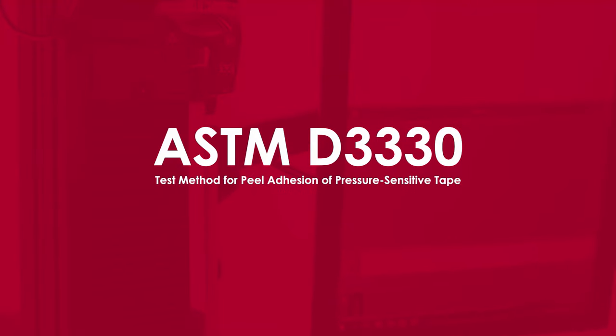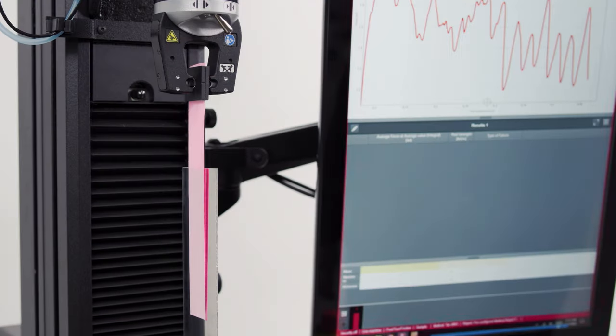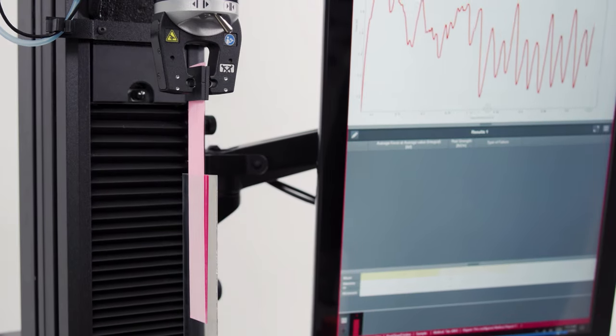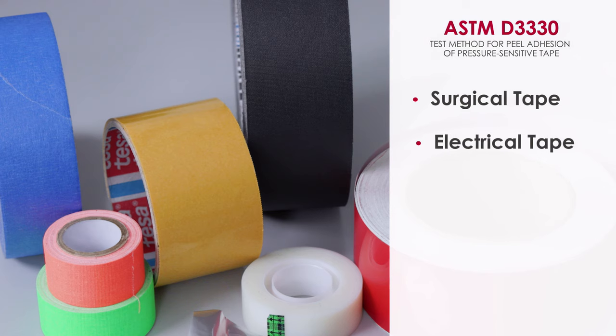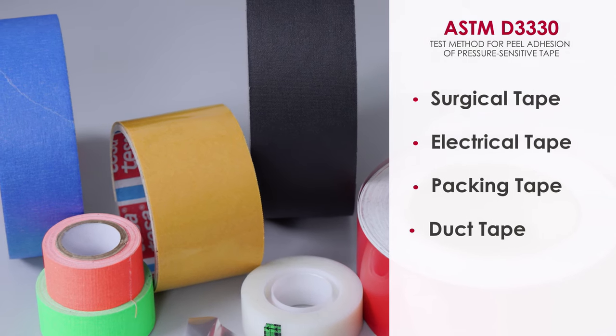ASTM D3330 is a testing standard used to determine the peel adhesion properties of single and double-sided pressure-sensitive tapes such as surgical tape, electrical tape, packing tape, and duct tape.